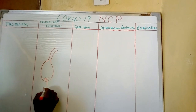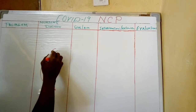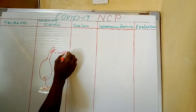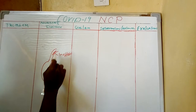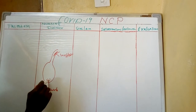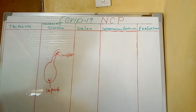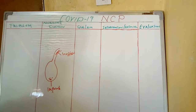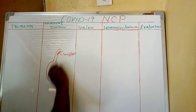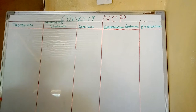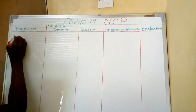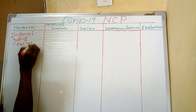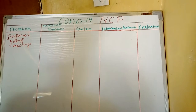If the problem is happening inside the alveoli, you say the problem is impaired. If the problem is happening along the airway, you are going to call it ineffective. So in this case, we have a patient who has coronavirus, and the nursing problem will be impaired gaseous exchange.